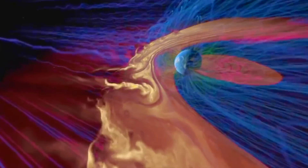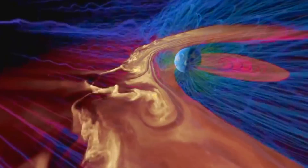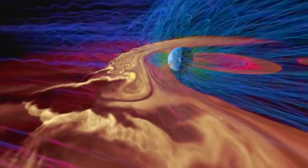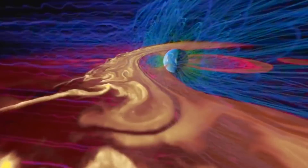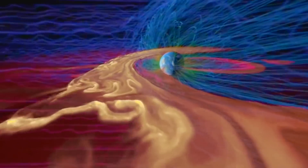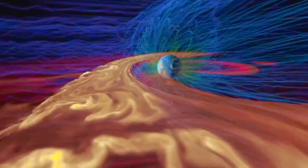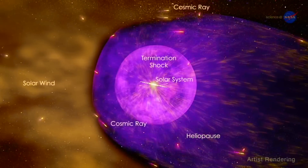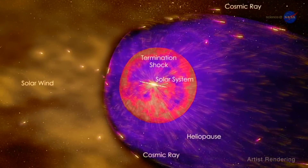Good evening, folks. We're going to hit a very critical aspect of how the sun impacts the whole atmosphere today. But first, we have to learn what a Forbush decrease is.